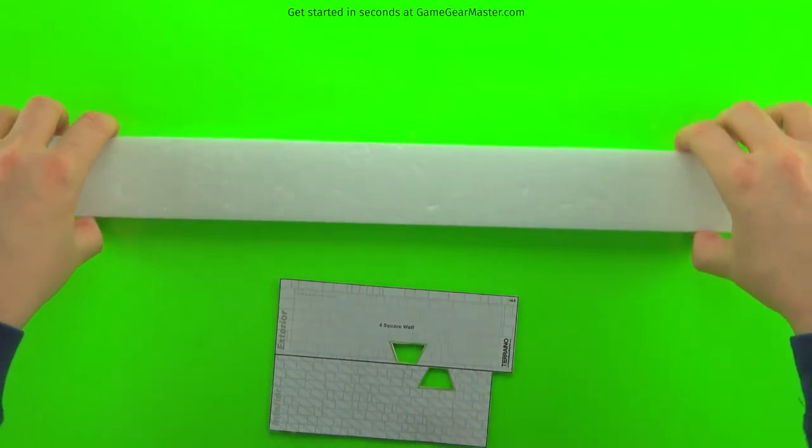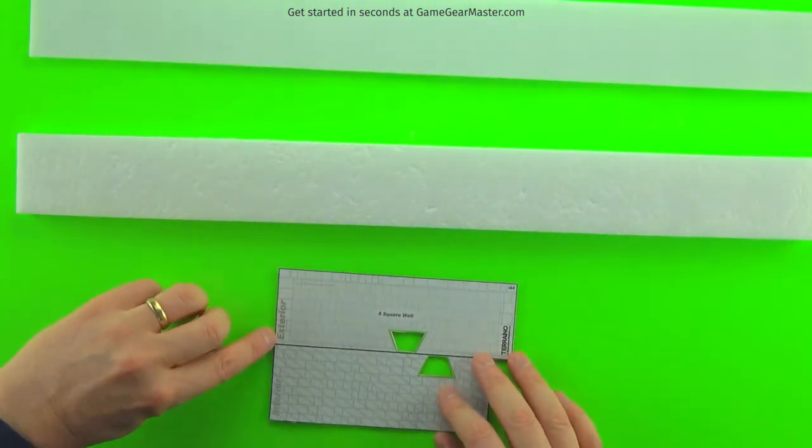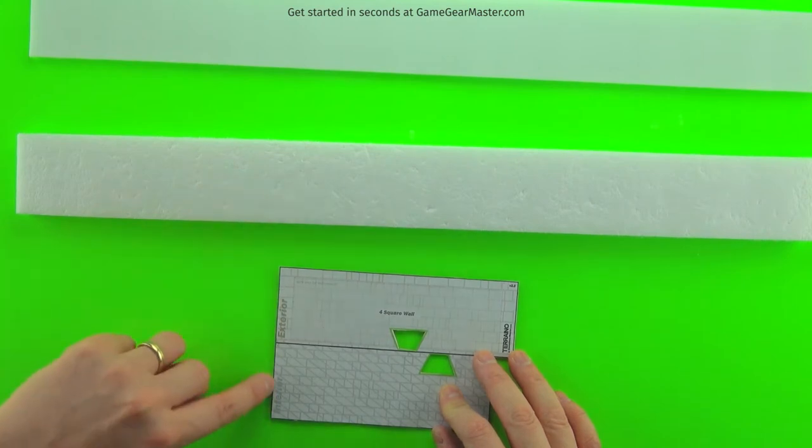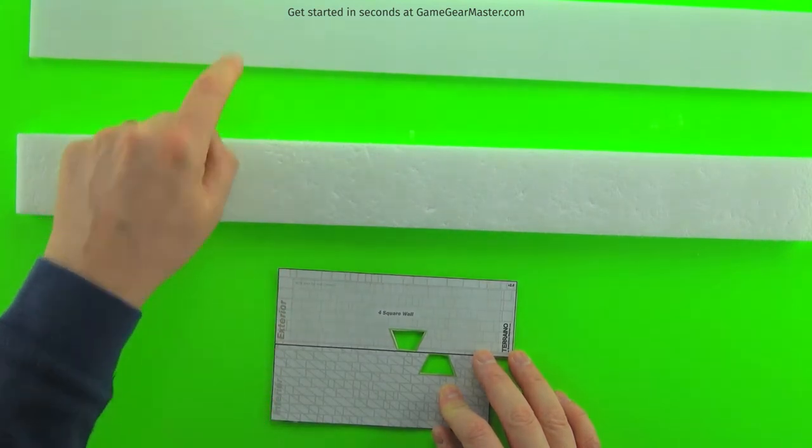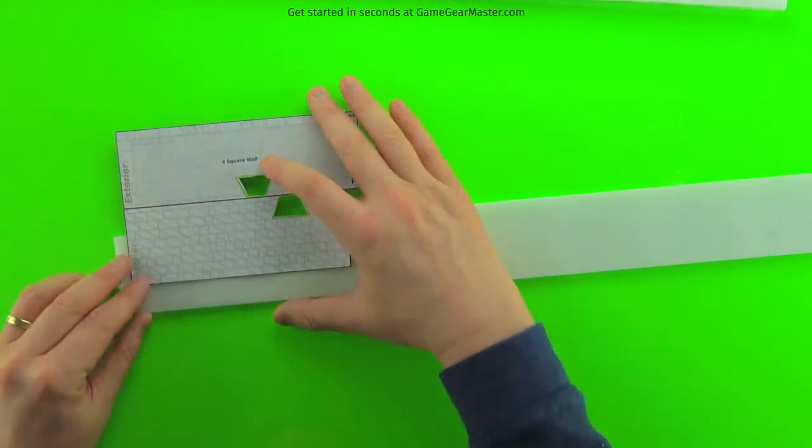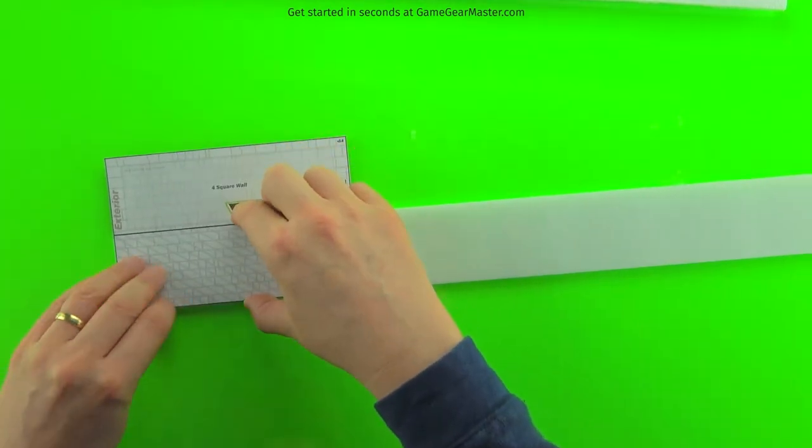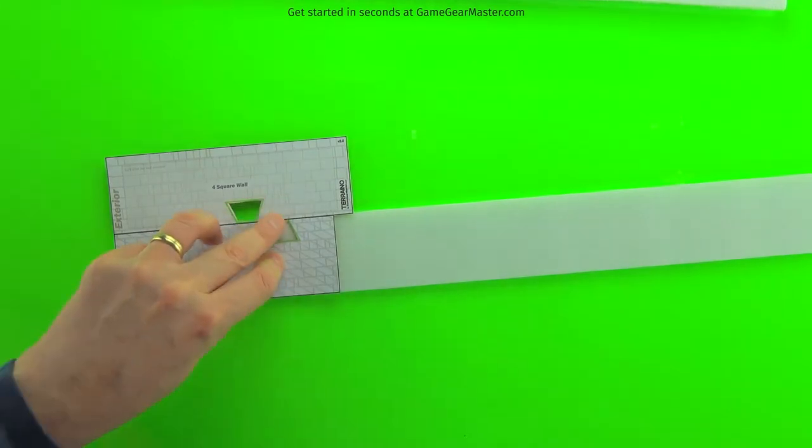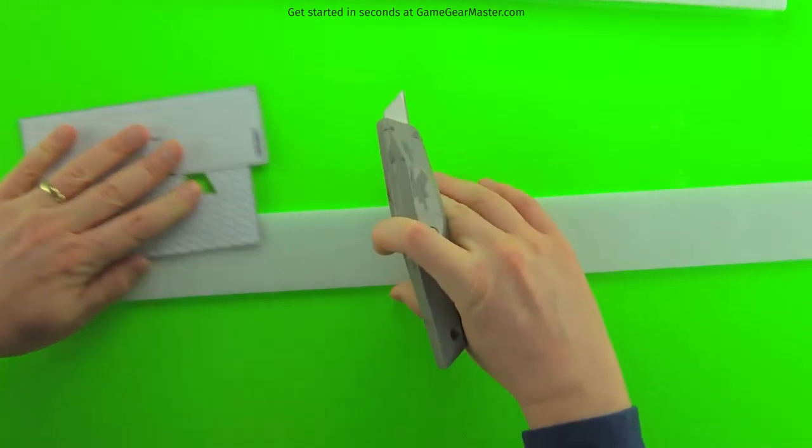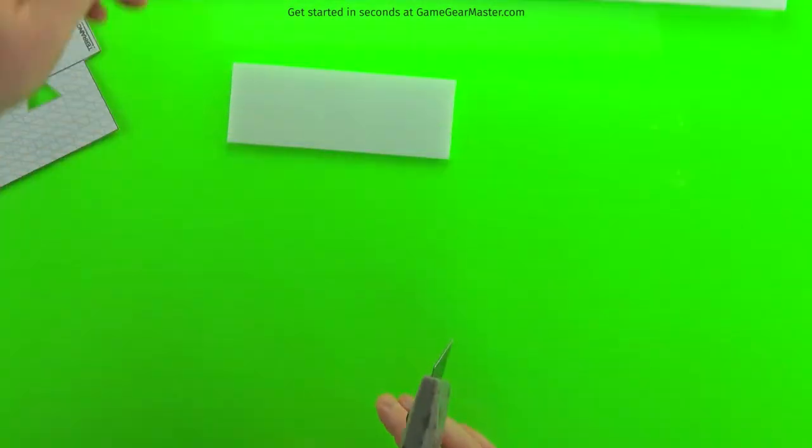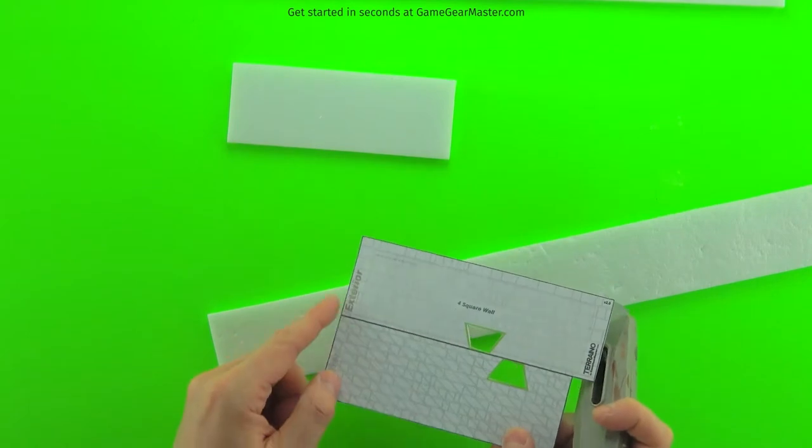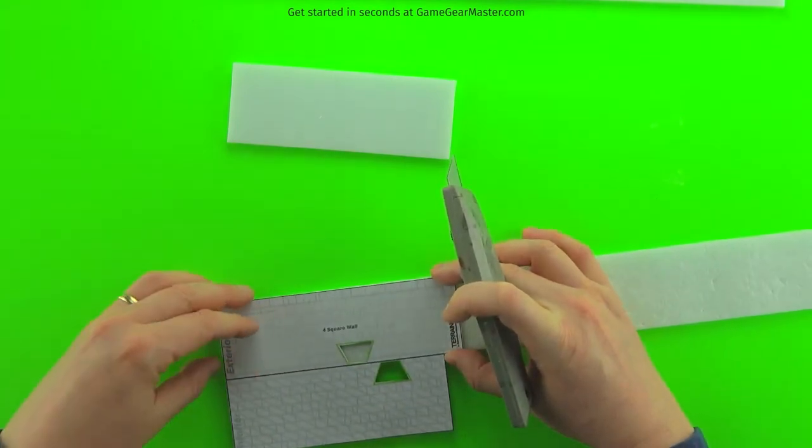Then it's time to trace on our wall templates. You'll notice there's two sections to each template. There's an exterior piece and an interior piece. The interior piece gets the untextured strip, and the exterior pieces get the texture strips. It's as easy as lining up the template, scoring the edge of the foam and snapping it off. Remember, you're going to need one interior piece for every two exterior pieces. So you're going to cut off two pieces here.